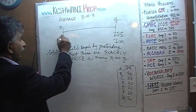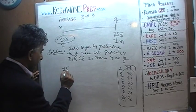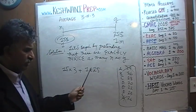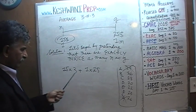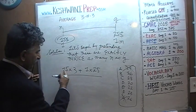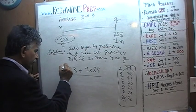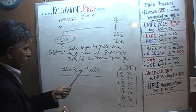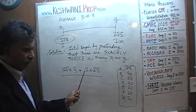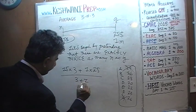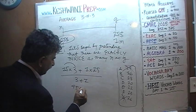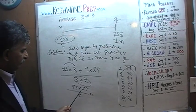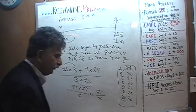So we calculate: 15 times 3 is 45, plus 25 is 70, divided by 4. How many fours does 7 have? Only one — remainder 3. That 3 joins the 0 to make 30. How many fours does 30 have? Seven fours are 28, remainder 2. So 70 ÷ 4 = 17.5.